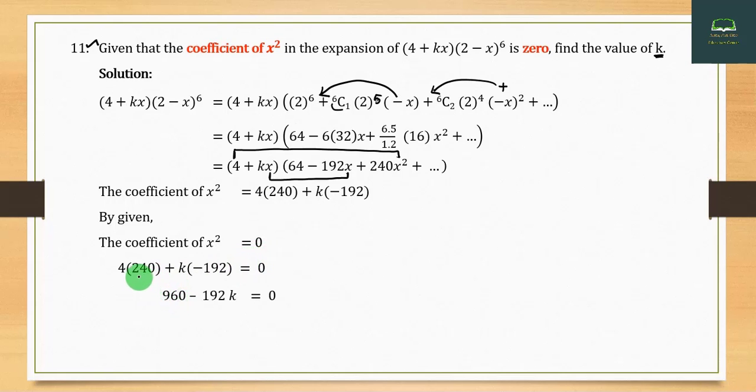Setting the coefficient of x² equal to zero: 4(240) - 192k = 0. Solving gives k = 5. So the value of k is 5.